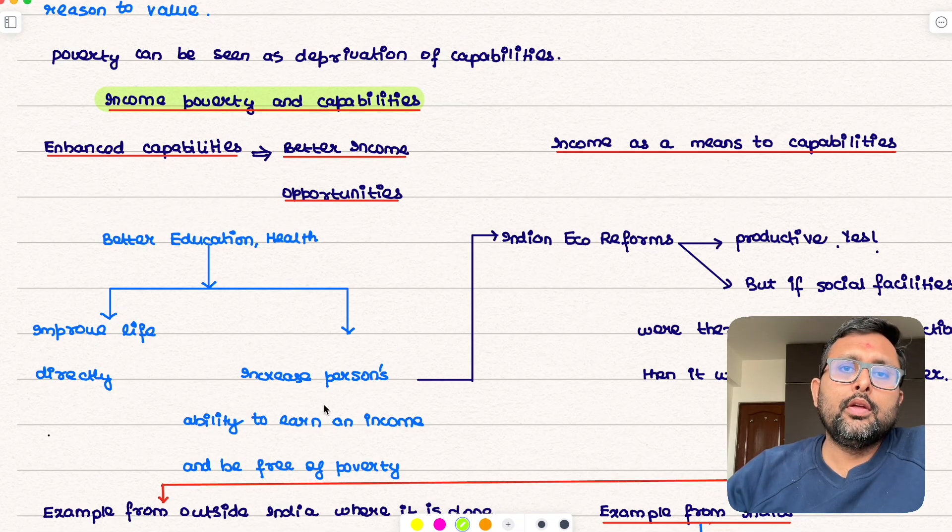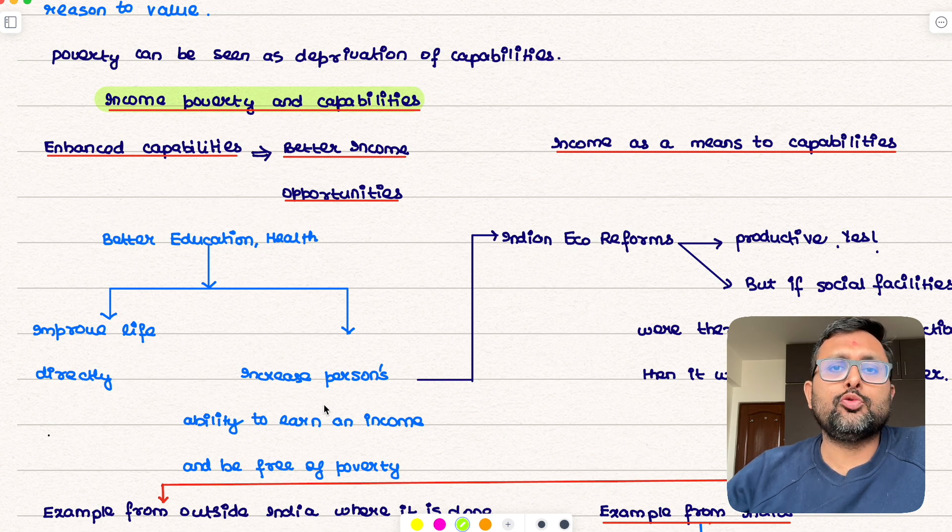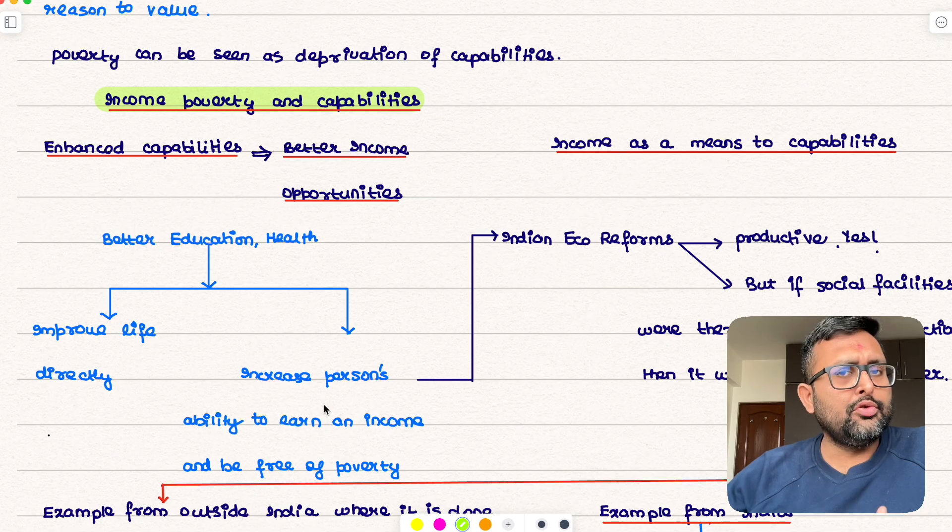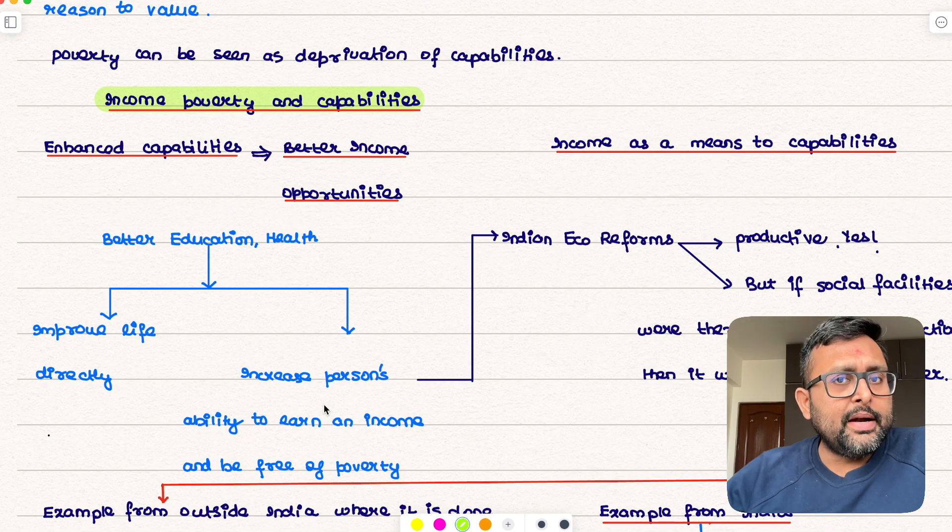Just imagine if government is going to give everyone better education, if government is going to ensure everyone will have better access to health care. They do not have to worry about education, they do not have to worry about health care. Their productive capacities are going to increase, they will be more capable and hence they will have better earning power also, right?